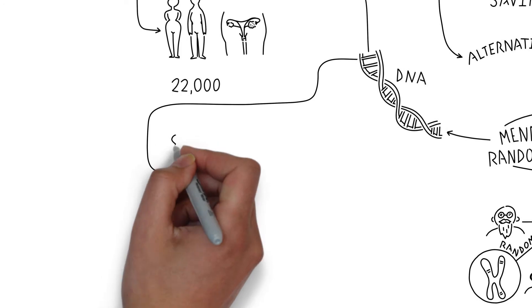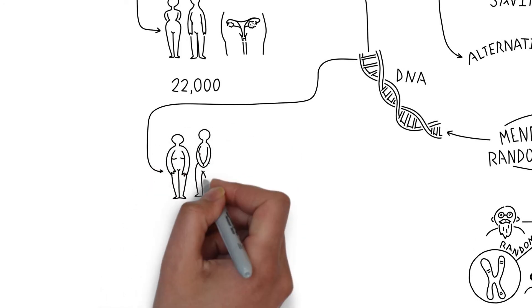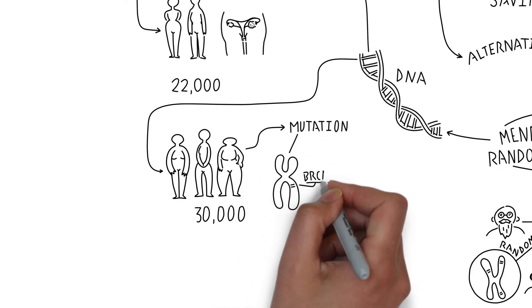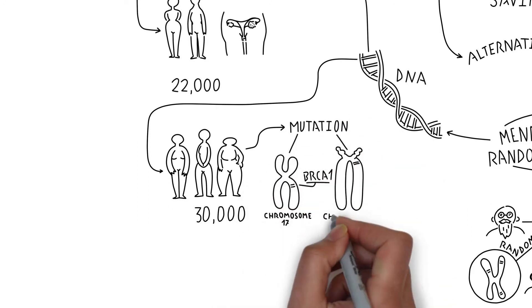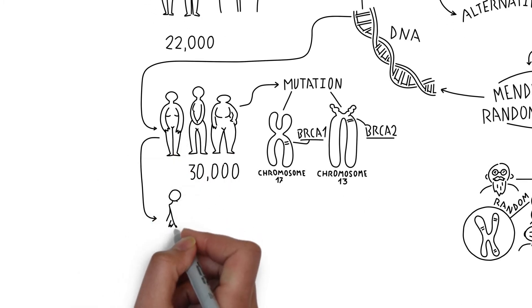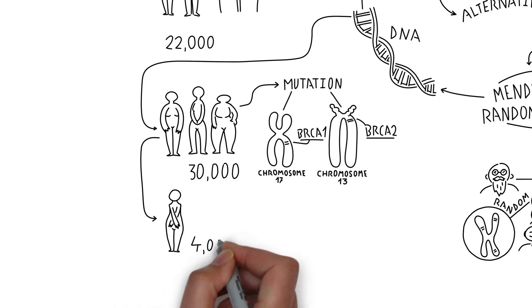We also looked at the DNA of over 30,000 women with a mutation in the BRCA1 or BRCA2 gene, which puts them at greater risk of ovarian cancer. Nearly 4,000 women in this sample had the disease.